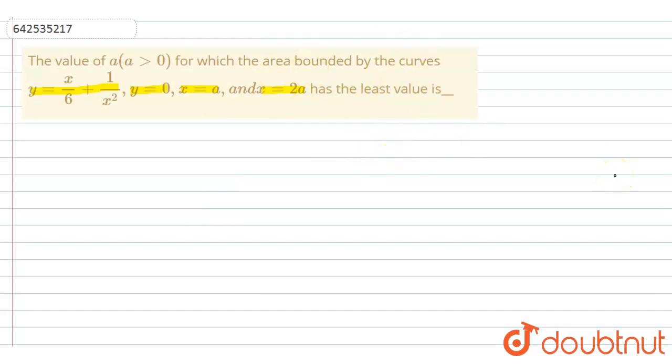Let's move to the answer. First, I'm going to write the given curve equation. The given curve equation is y equals x by 6 plus 1 by x square, and y equals 0, which is the x-axis. And x equals a and x equals 2a. This is the range limit they are given.